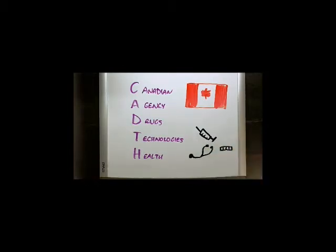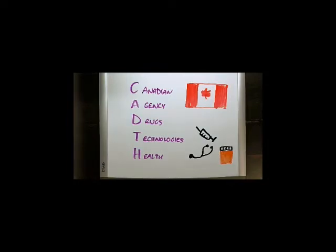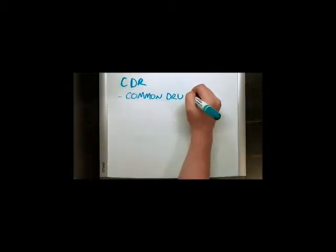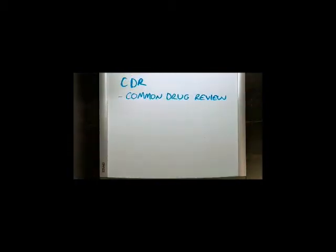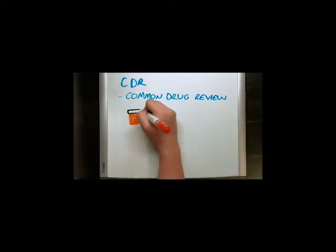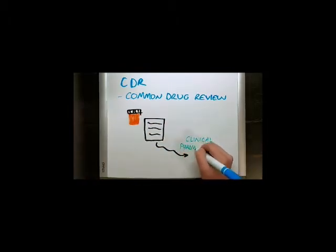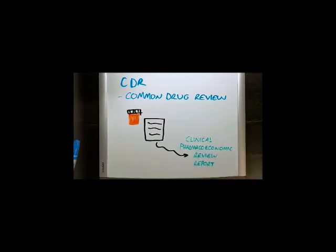One part of CADTH is the Common Drug Review, referred to as the CDR. This is a process that most drugs go through before entering the public system. The process starts with a submission from a manufacturer, which is received and processed by the CDR. The CDR then conducts a systematic review based on the available clinical evidence provided by the manufacturer, and also completes an independent literature review to look into the data provided.